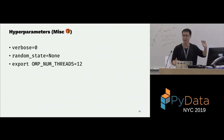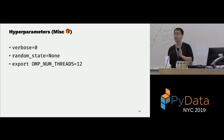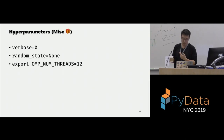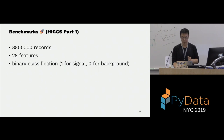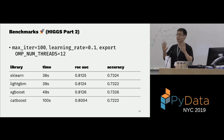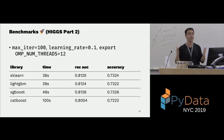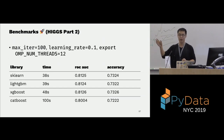There are miscellaneous parameters: verbose mode, random_state, and an environment variable OMP_NUM_THREADS that controls the number of cores the algorithm uses. For benchmarks, I'm using the Higgs boson dataset with 88 million records and 28 features — a binary classification problem where 1 means signal (Higgs boson detected) and 0 means background. I set max_iter to 100, learning rate to 0.1, and used all 12 cores.